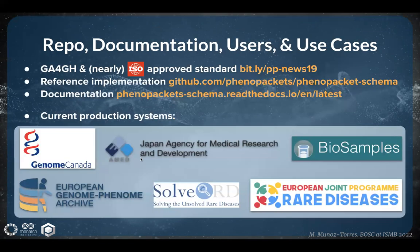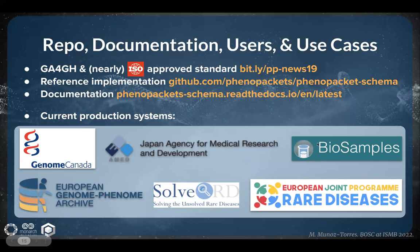There's also a manuscript underway. Phenopackets is an approved standard of GA4GH and is currently going through the last step of review for approval as an ISO standard. Details about our reference implementation and documentation materials can be found on the links listed here. Some organizations such as biobanks and journals are already using phenopackets. For instance, the Phenopackets standard is currently implemented at the Japan AMED Biobank Network, where 600,000 patient phenopackets have been generated. The European Genome Phenome Archive, the Biosamples Database, the SolverD Consortium, Genome Canada, and the European Joint Program on Rare Diseases are either in the process of or have already implemented phenopackets.